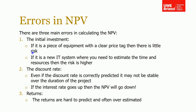There are three main sources of risk and error in calculating net present value. The first is the initial investment. If it's a piece of equipment with a clear price tag, there's little risk. But if it's a new IT system or a new building, estimating the time and resources required carries higher risk, as there are many variables and you could get it wrong.